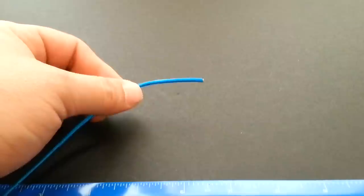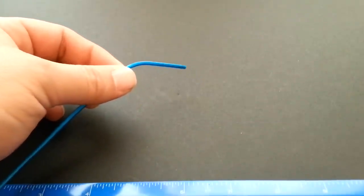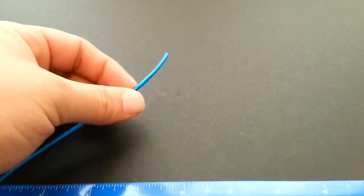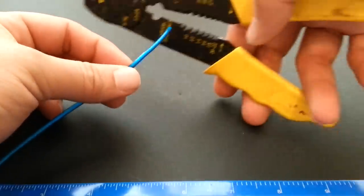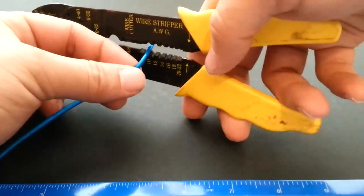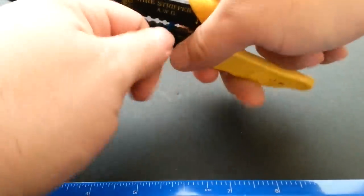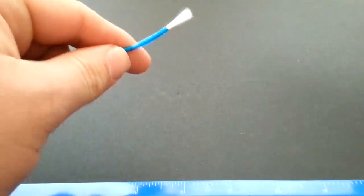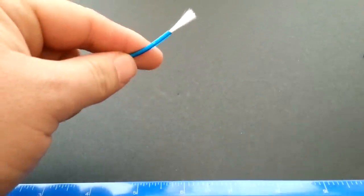So to start off with, you need to take off some of the casing from your washing line. So I'm going to use my wire strippers and you want to take off about an inch. It's probably just a little less, but not to worry.